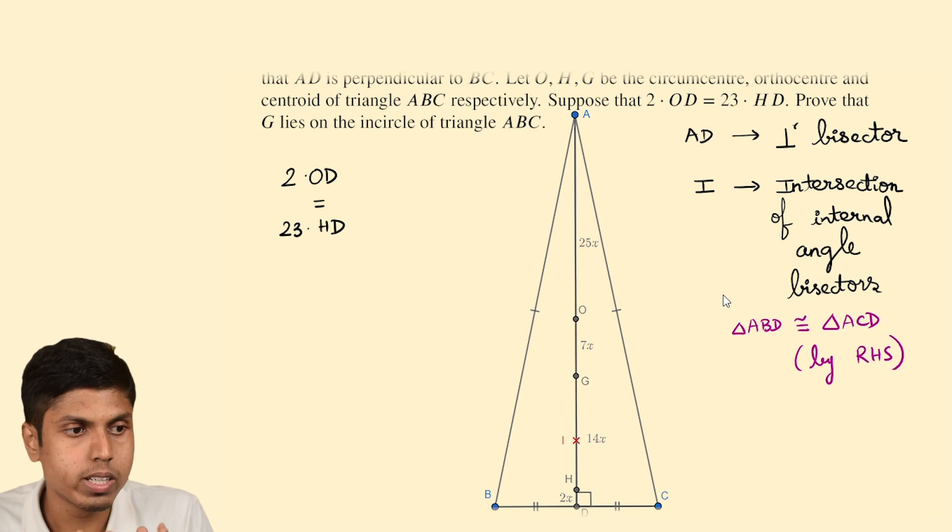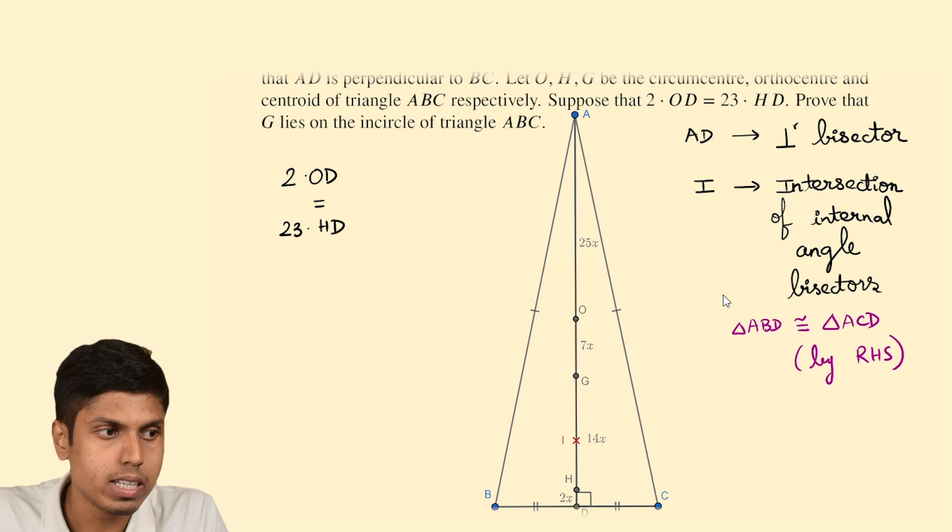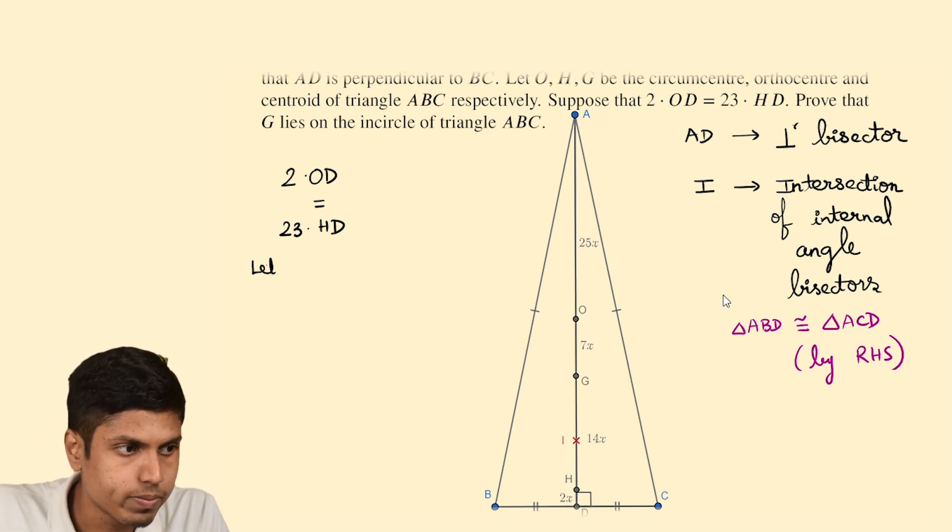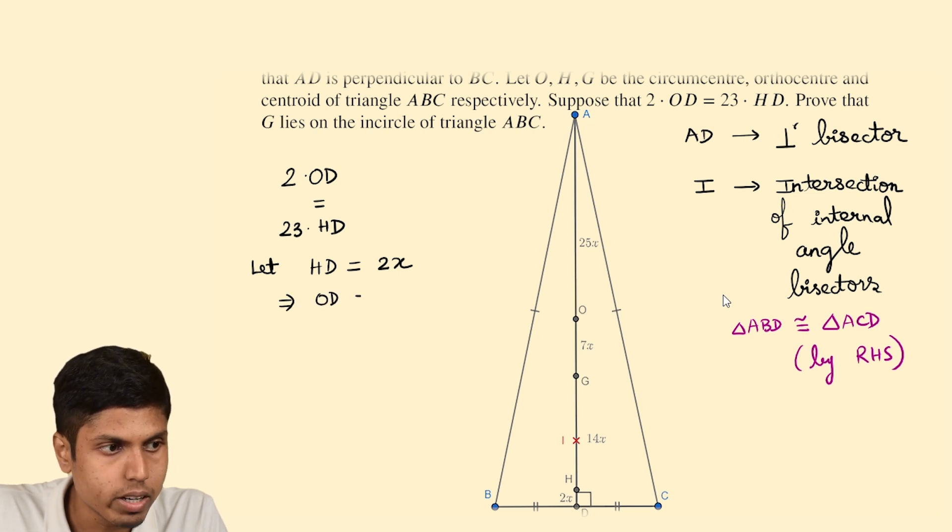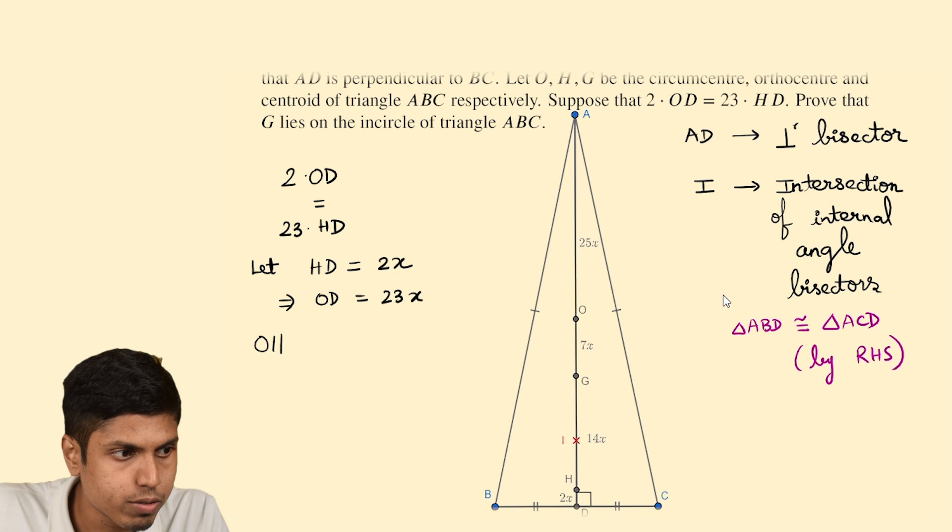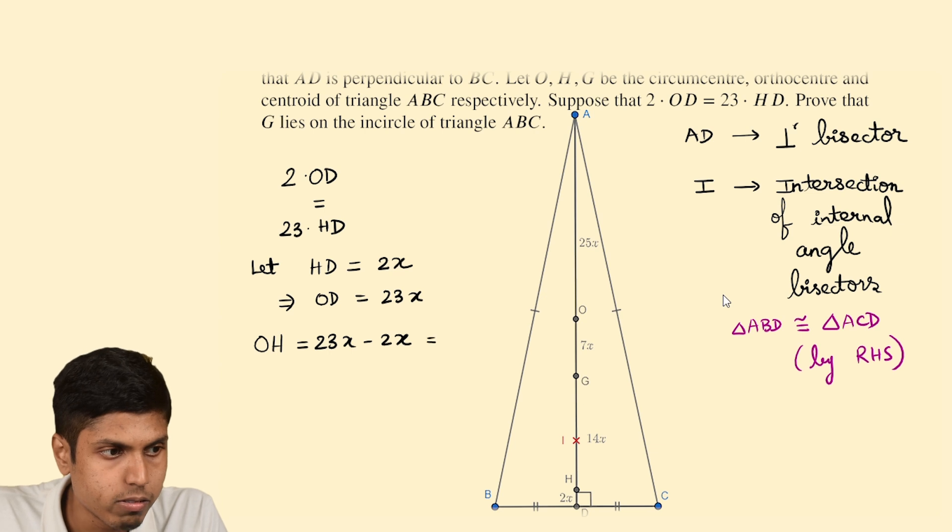And this diagram also follows from the actual figure. So but you need not worry about that since HD is clearly smaller than OD. You can proceed by drawing point H closer to D than the point O. And let's assume first that HD equals 2X. Now if HD is 2X from the given condition OD will be 23X. So HD is 2X and OD will be 23X. So thus OH will be 23X minus 2X or in other words OD minus HD which is 21X.